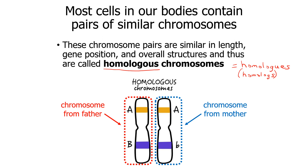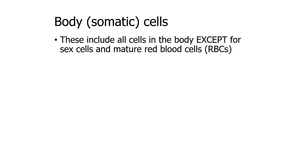These homologous pairs are in most of the cells of our body. We call most of the cells of our body body cells, or somatic cells — they're the same thing. All the cells in the body are included except for sex cells and mature red blood cells. That means neurons, skin cells, liver cells, bone cells, epithelial cells, etc. — those are all body cells.